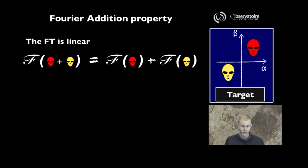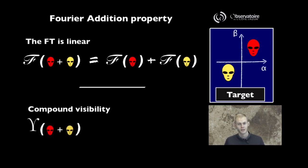Using this linearity property, although you may not be able to compute the Fourier transform of the sum of two alien faces, if you know the Fourier transform of one alien face, the compound visibility is just the sum of the individual visibility measurements.